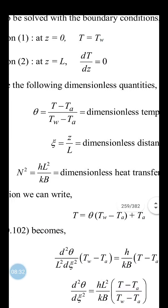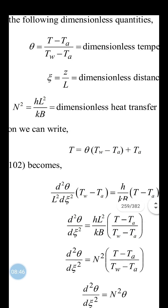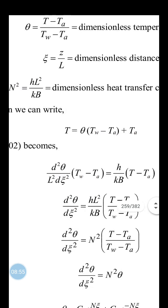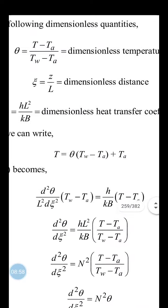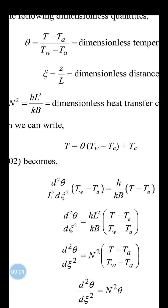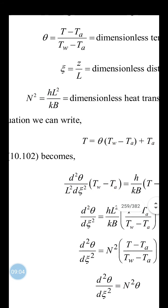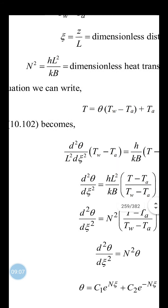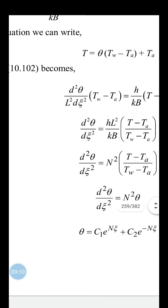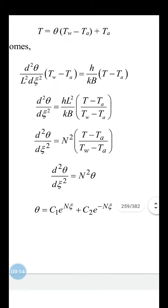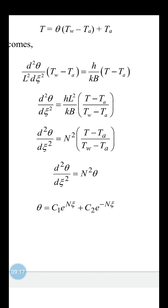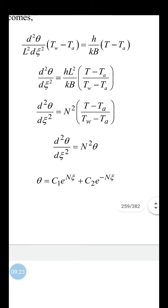Converting the equation into dimensionless form, d²θ/dζ² = N²θ, where (T − T_a)/(T_w − T_a) = θ. The general solution of this second-order ODE is: θ = C₁·e^(Nζ) + C₂·e^(−Nζ), where C₁ and C₂ are constants to be determined from the boundary conditions.